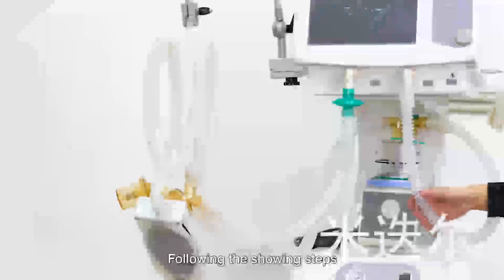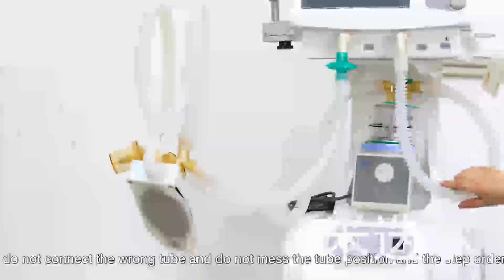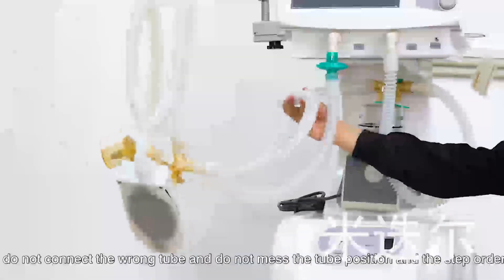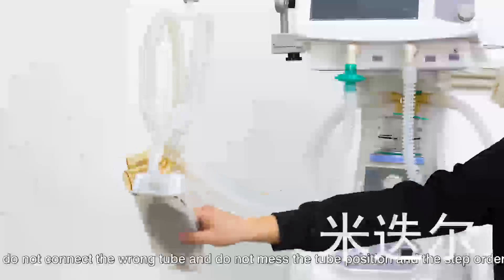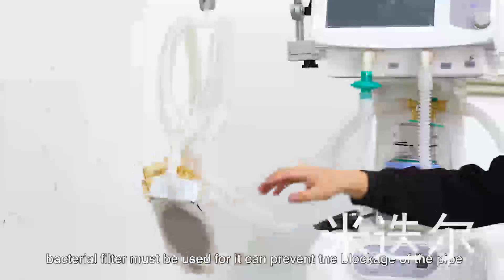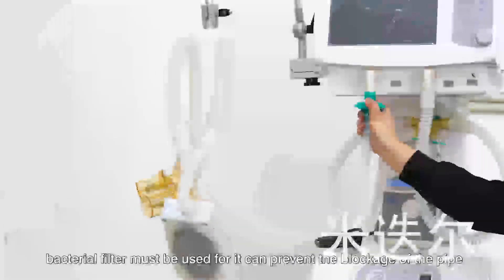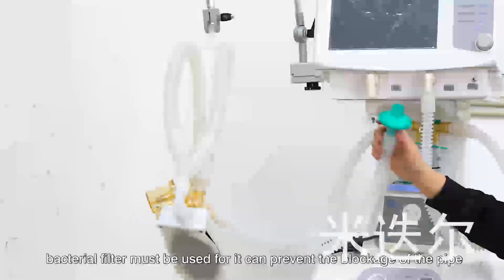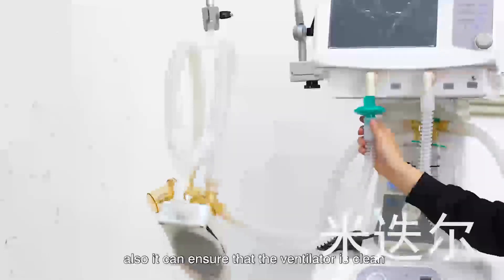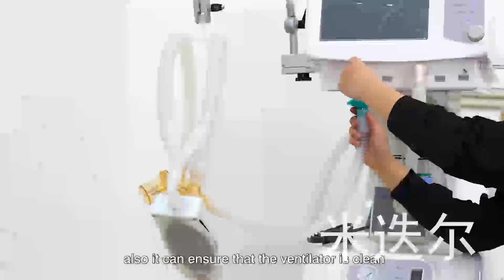Following the showing steps, do not connect the wrong tube and do not mess the tube position and step orders. Bacterial filters must be used, for it can prevent blockage of the pipe. Also, it can ensure that the ventilator is clean.